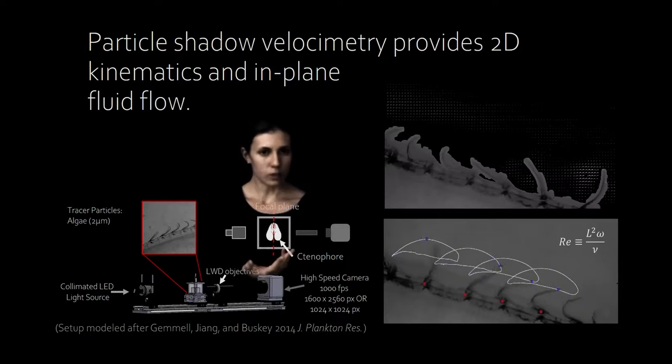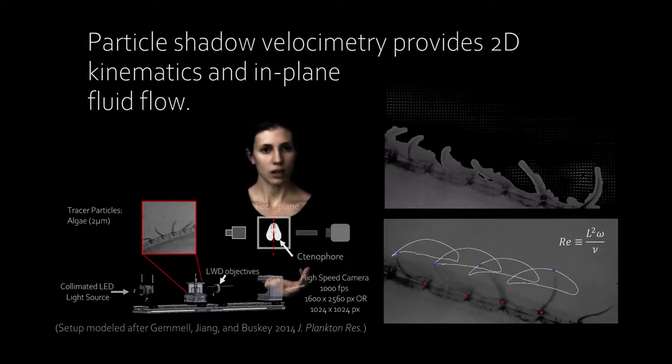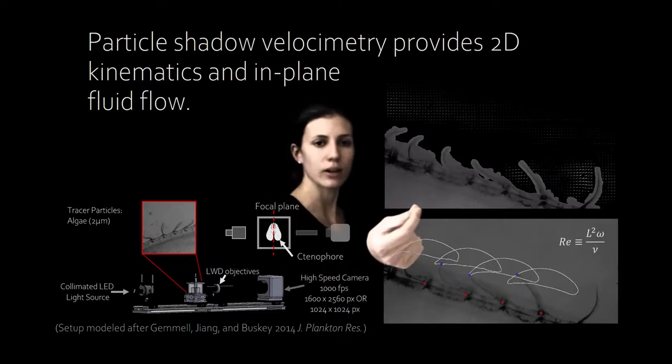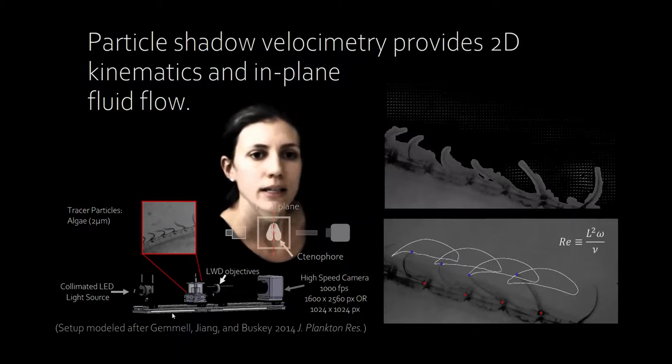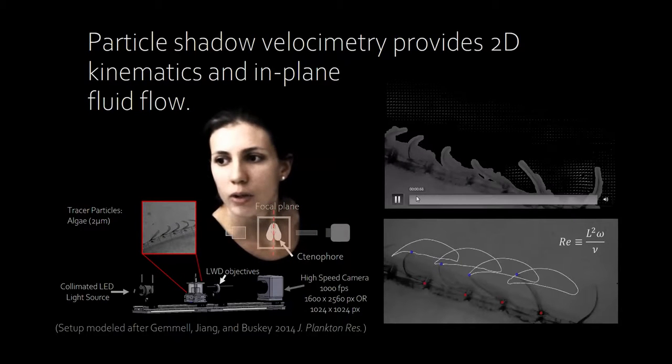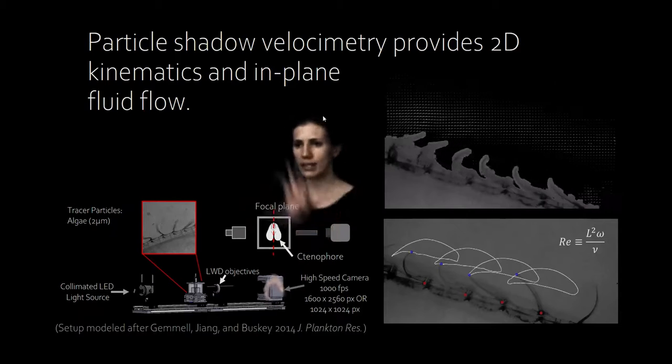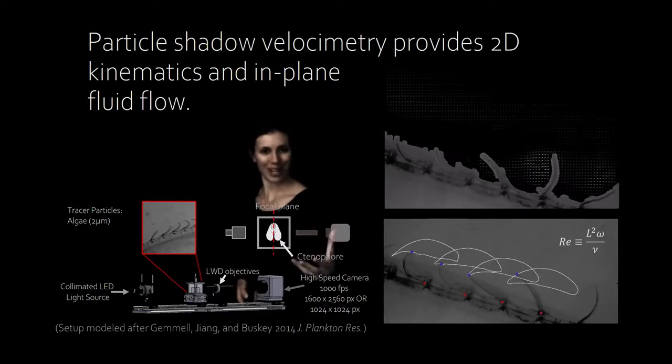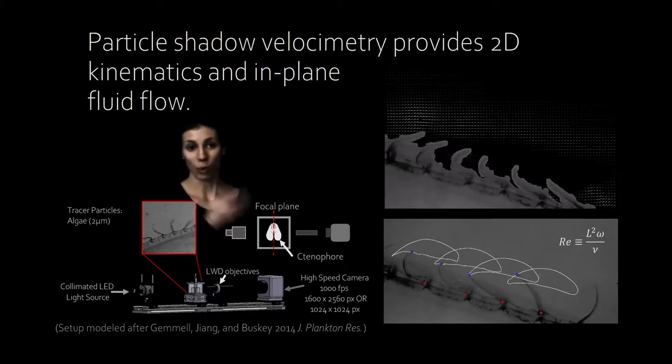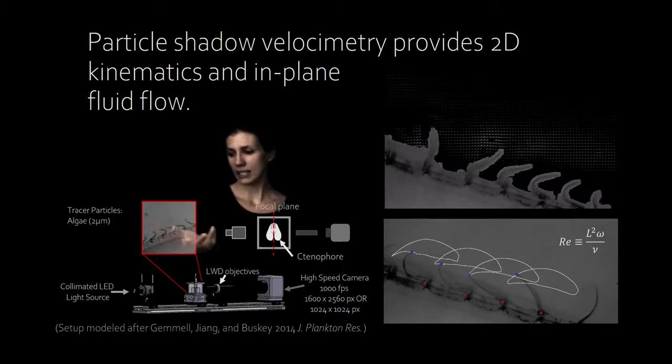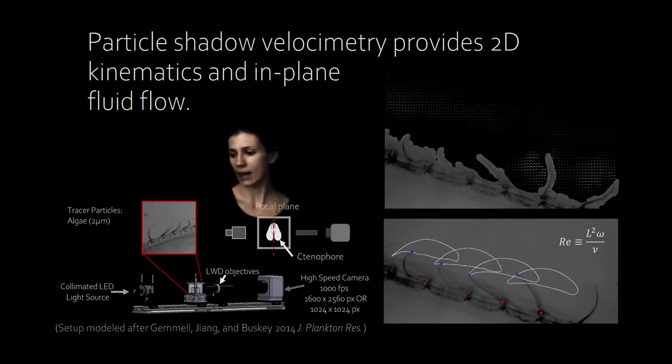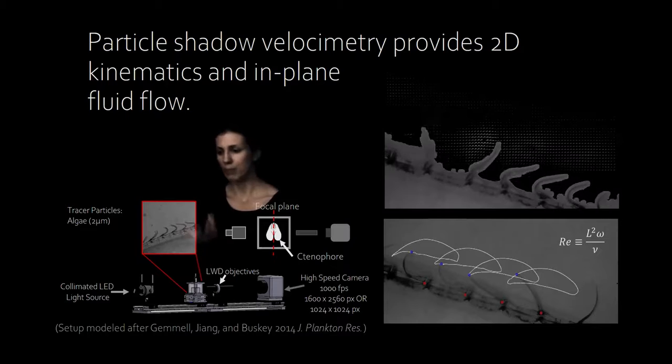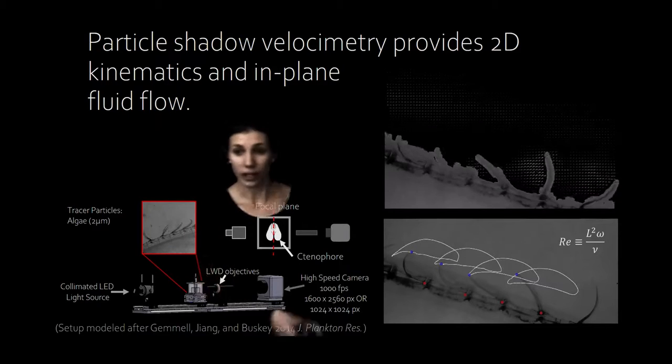What we can do then is we can calculate the velocity fields behind the ctenes. The resolution there is very nice between the ctenes and also in the far field. I'm not going to actually be talking about any of these data today. What we're really going to be focusing on is the kinematics of the ctene tip. This is really all we need to get our asymmetry parameters SA and TA. We can calculate SA and TA then for each beat of each ctene of each animal in our data set.